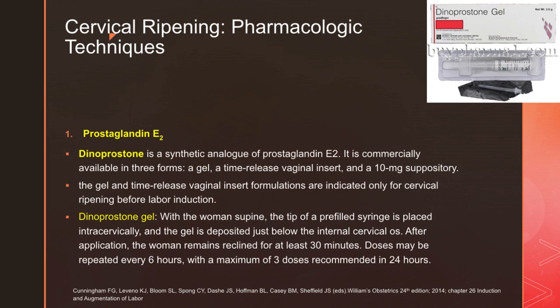The pharmacologic techniques for pre-induction cervical ripening include prostaglandin E2, and what we have available in the market is dinoprostone. Dinoprostone is a synthetic analog of prostaglandin E2, commercially available in three forms: a gel, a time-release vaginal insert, and a 10 mg suppository. The gel and time-release vaginal insert formulations are indicated only for cervical ripening before labor induction.